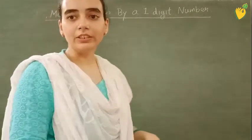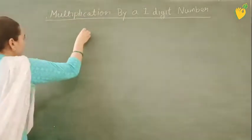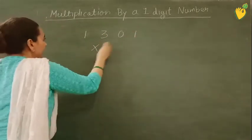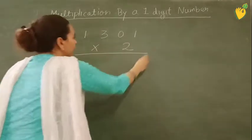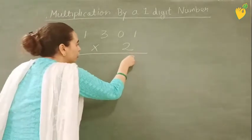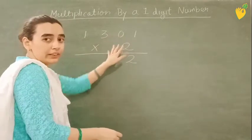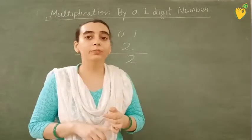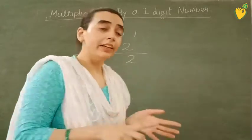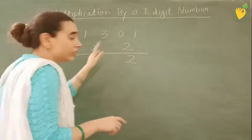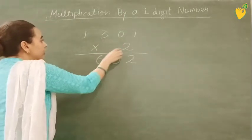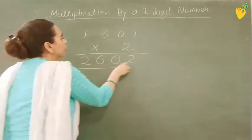Now the next question I am writing here. 1301 multiplied by 2. So 2 1's are 2. 0 multiplied by 2. As I told you when I was teaching you properties of multiplication, whenever we multiply any number by 0 we get 0. So 2 0's are 0. 2 3's are 6. 2 1's are 2.